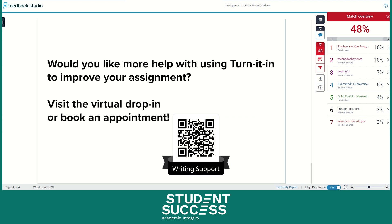After you have reviewed your work using Turnitin's similarity report, make sure to take time before your due date to edit your assignment. For each source used, you must have a reference list at the end of the document. Once you've edited your work, make sure to submit your assignment by the due date. Congratulations! Now you know how to view and interpret your Turnitin similarity score. Remember, Turnitin is a tool to help you maintain good academic integrity and help improve your writing skills.